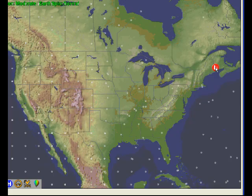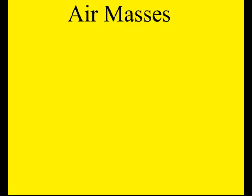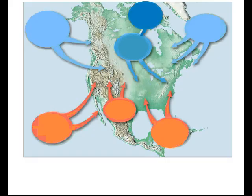We can talk about air masses — these large masses of air that move into our area. Here's a map that shows where these large air masses might be coming from. If we look at this one air mass here, we notice that it is moving into our area kind of from central Canada, so it's going to have the characteristics of that area.